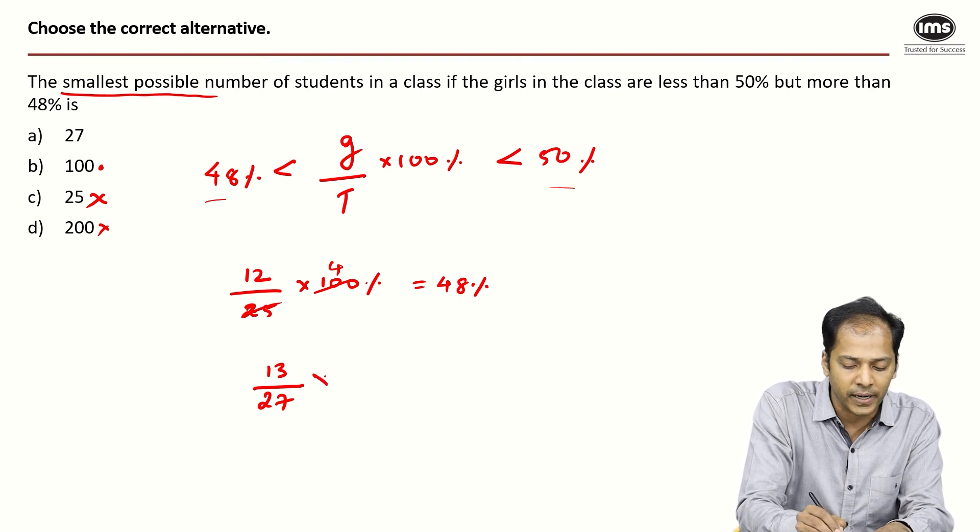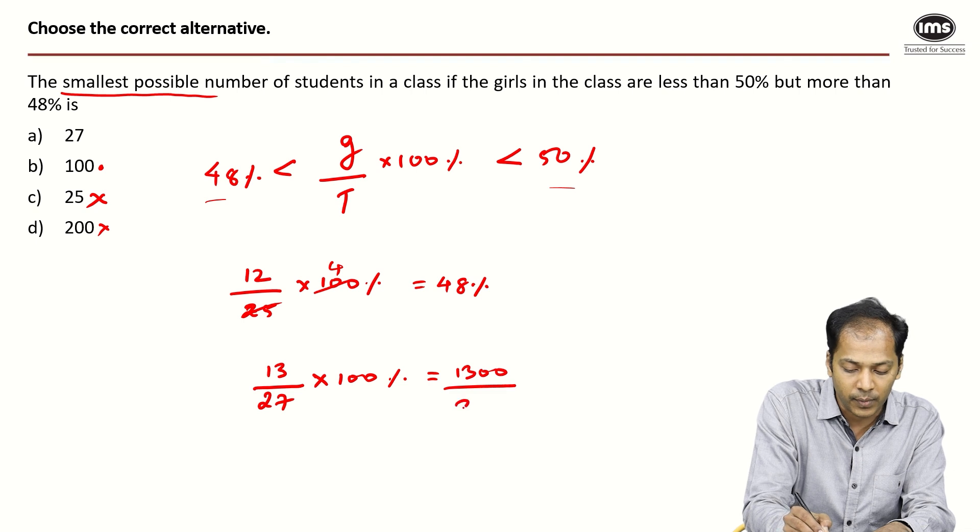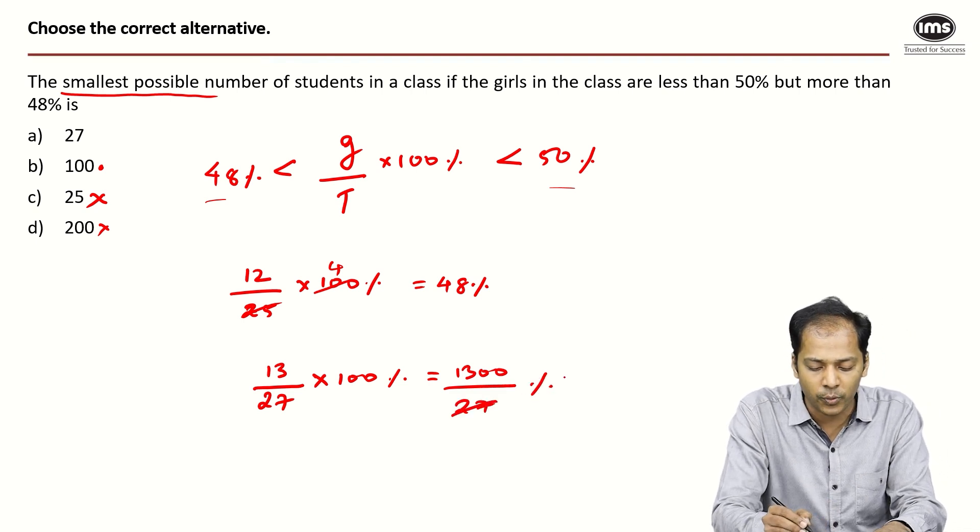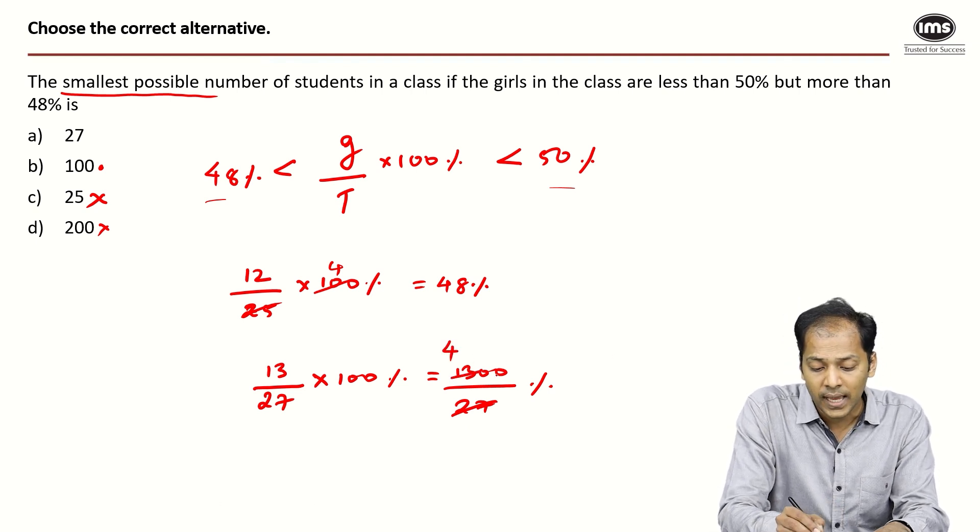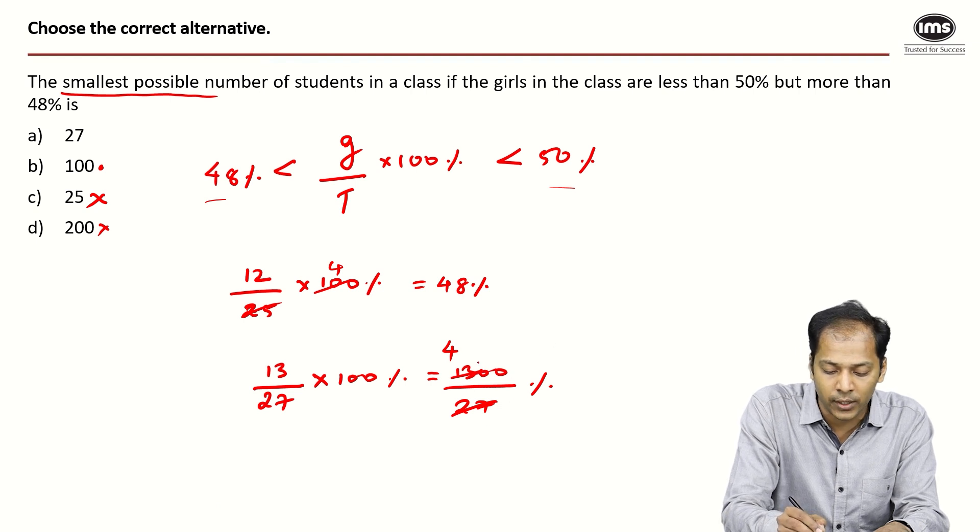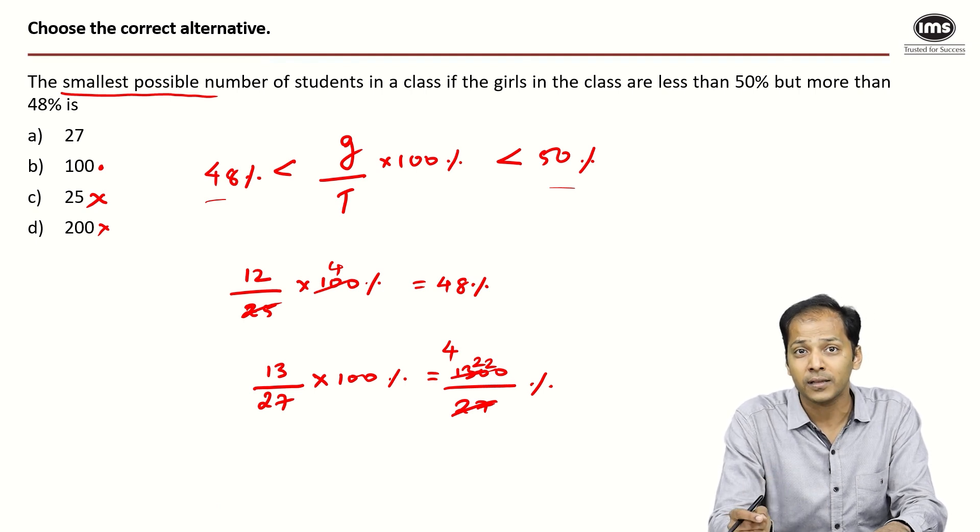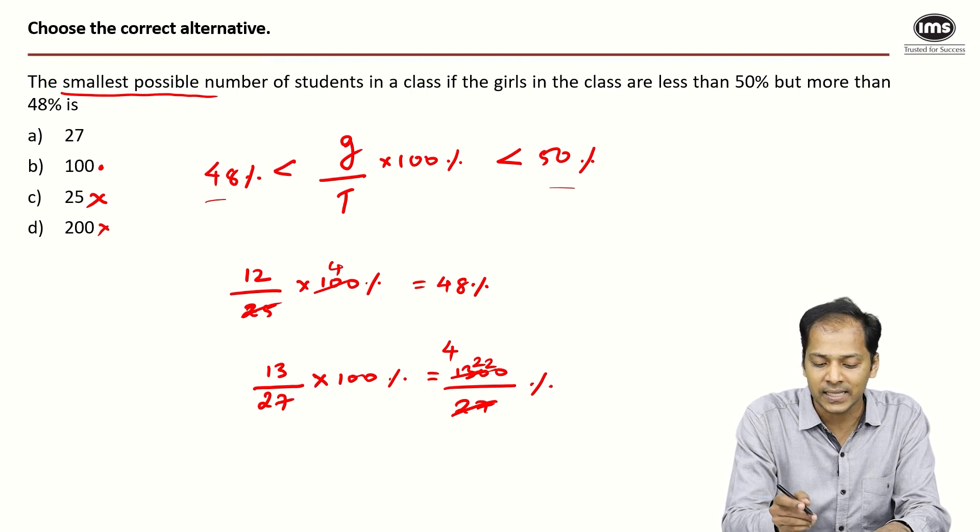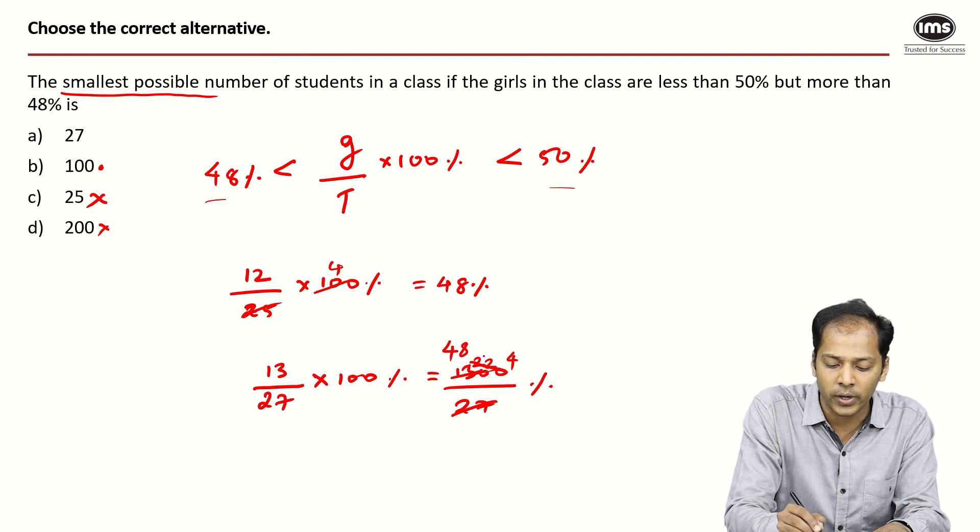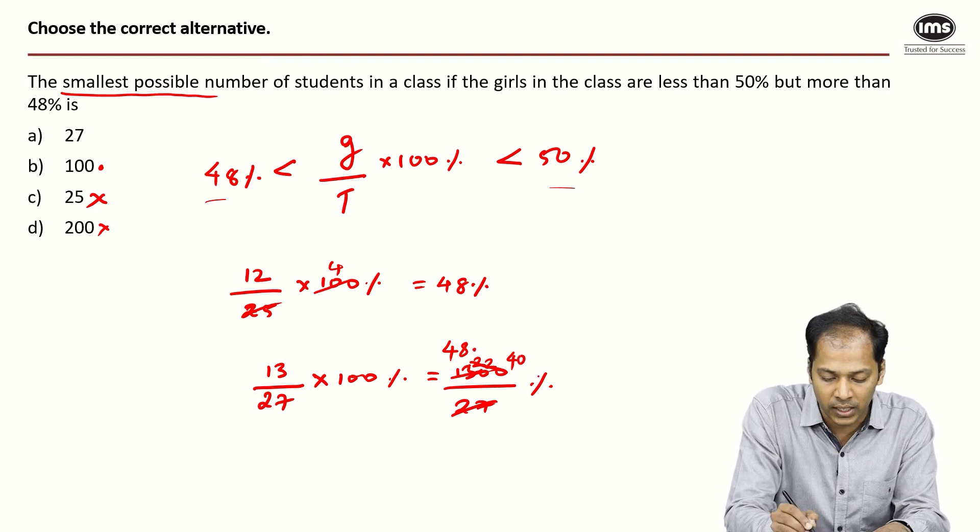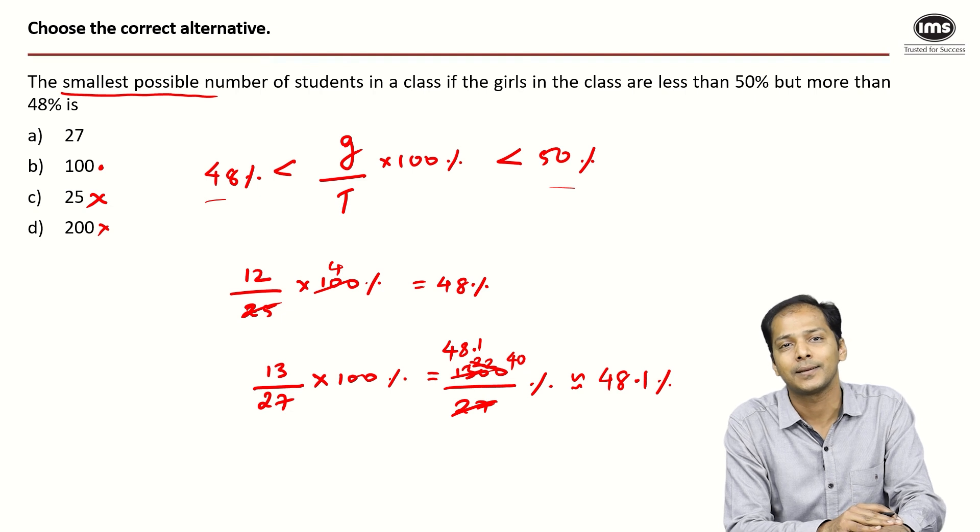If I do this calculation, 13 times 100 equals 1300 divided by 27%. 27 goes 4 times in 130. The remainder is 22, the next number is 220. In 220, 27 goes 8 times in 216, so the remainder is 4. In 40 it goes once, so this is approximately 48.1%.